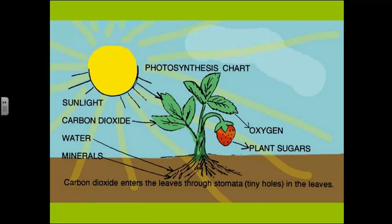We can summarize this into a neat little photosynthesis chart: carbon dioxide goes in through the leaves, water goes in through the roots, minerals go in through the roots — although minerals are not essential to the process of photosynthesis itself — and then oxygen and sugar come out of the process.